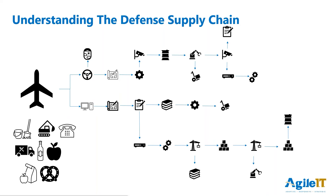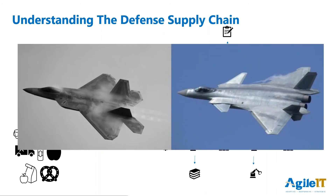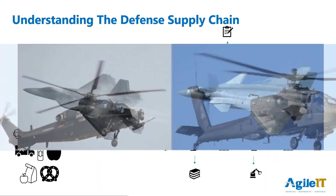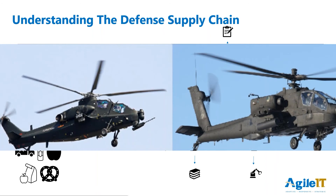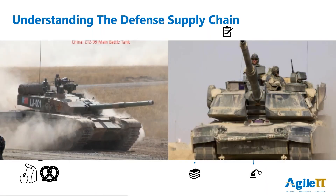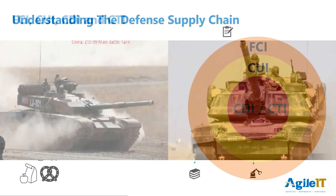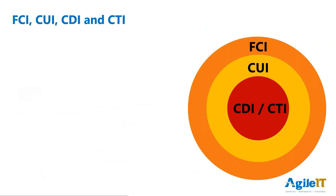Let's give an example. Here's a picture of the US F-22 and the Chinese J-20 fighter planes. Here's the US Apache versus the Chinese Thunderbolt, and the M1 Abrams versus the ZTZ-99. So within this web of contracts, we have different types of information.